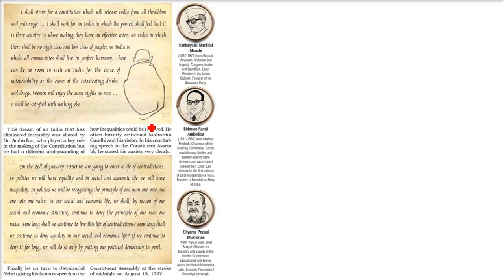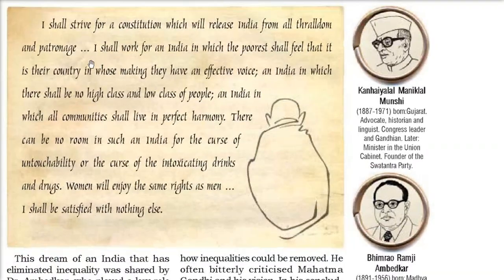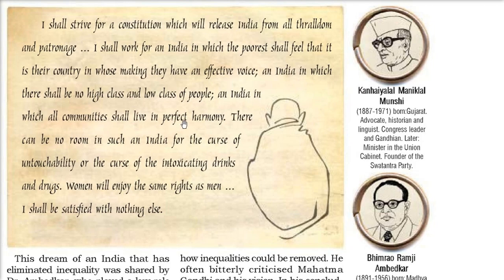Gandhiji said: I shall strive for a constitution which will release India from all trammels and patronage. I shall work for an India in which the poorest shall feel he is also part of making the country. In India where there is no high class, no low class, no class distinction — which includes all communities in perfect harmony. For untouchability, intoxication and drugs there should be no place. Women and men should be equal and enjoy all the same rights. Gandhiji said: I shall not be satisfied with nothing else than these.